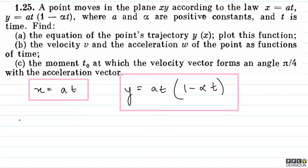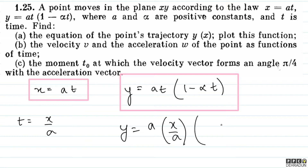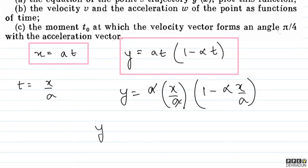Very easy: from x = at we get t = x/a. Substituting into the y equation: y = a·(x/a)·(1 − α·(x/a)). Here a cancels with a, so y = x·(1 − αx/a).